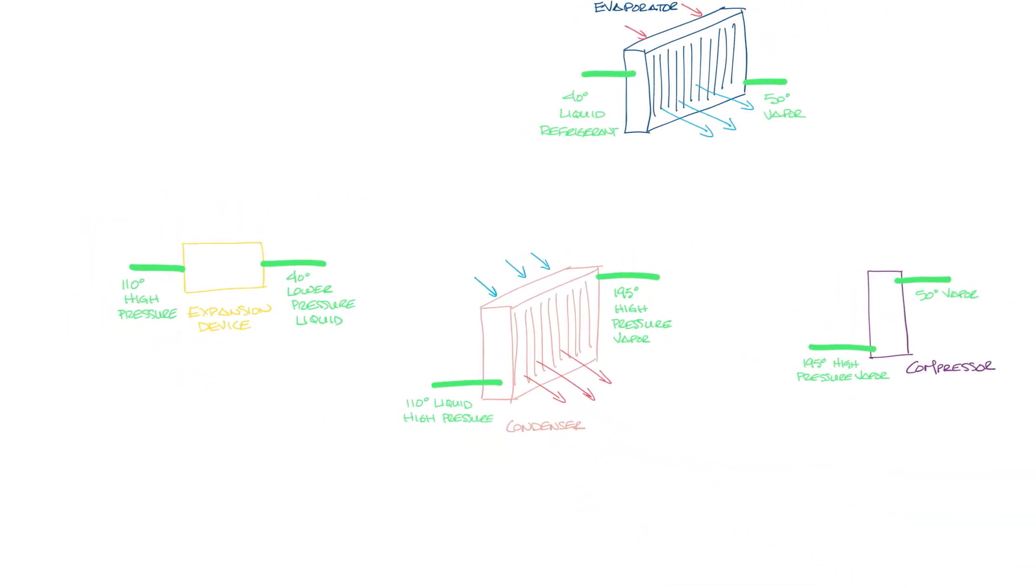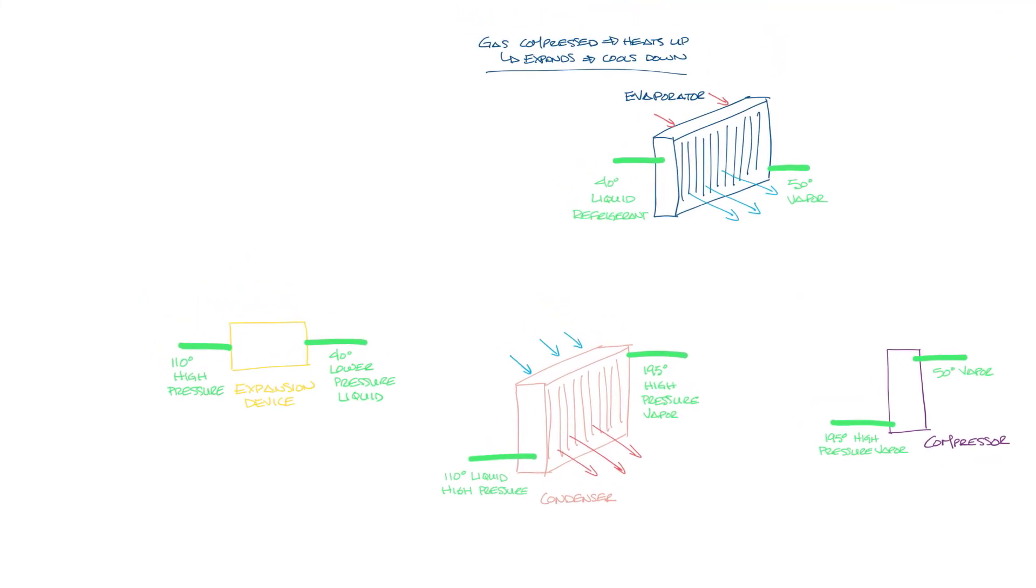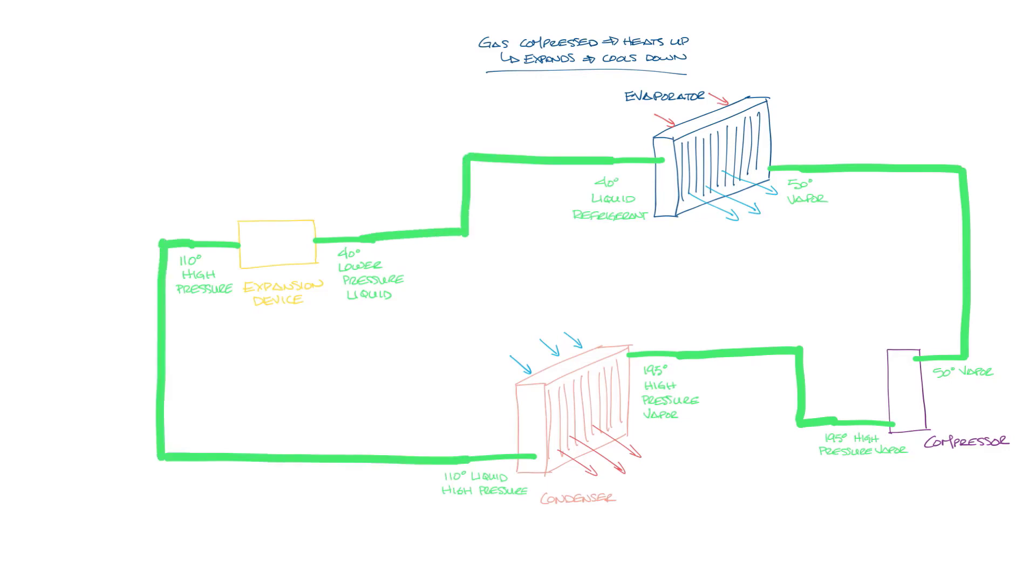So let's zoom out and look at our whole system. And let's move our expansion device up a little bit to make some room. You have the evaporator, compressor, condenser, and expansion device. Now let's connect our refrigeration lines. You put all this together, and this is the refrigeration cycle.